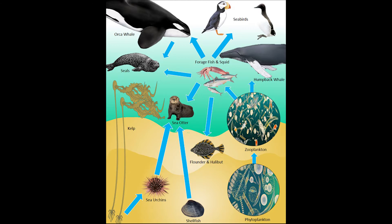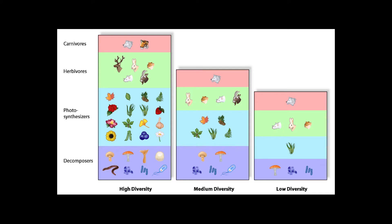Food webs throughout the world all have the same basic trophic levels. However, the number and types of species that make up each level varies greatly between different areas and ecosystems. What would happen if we removed one piece of the food web? In general, food webs with low biodiversity are more vulnerable to changes than food webs with high biodiversity. In some food webs, the removal of a plant species can negatively affect the entire food web, but the loss of one plant species that makes up only part of the diet of an herbivore consumer may have little or no effect.